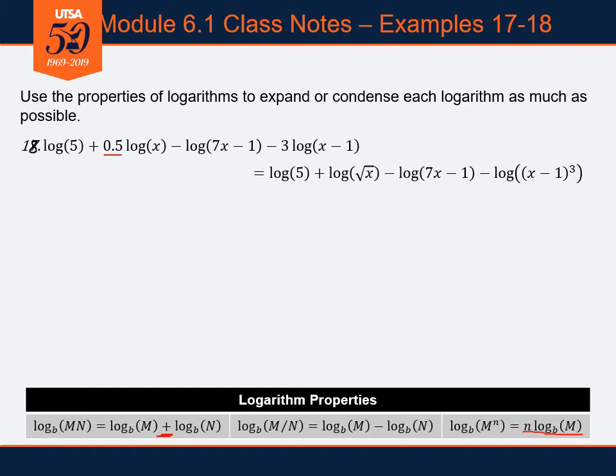Off to the right, our power rule for logarithms says I can take a number times a logarithm and rewrite that number as a power. My result became too long for one line, so I've skipped to the next line. I kept log of 5 the same, but rewrote the second logarithm as log of the square root of x, because I took that 0.5 — which is the same as 1/2 — and turned it into the power x to the 1/2, which is the square root of x.